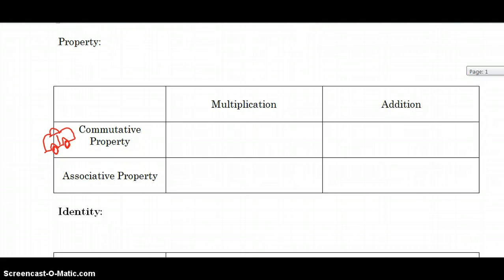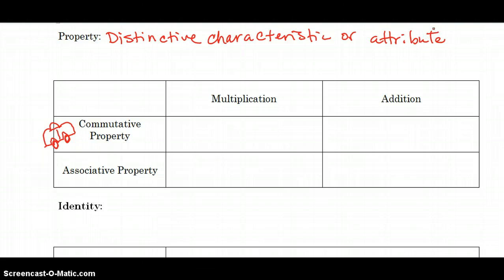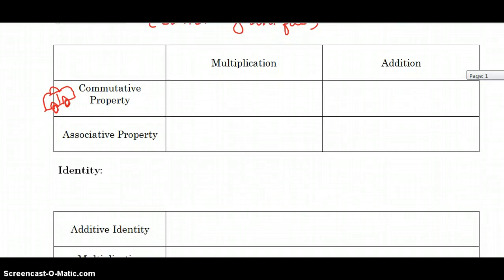If someone asks me to describe some properties of you, they're asking me to give some distinctive characteristics about you. So a property is a distinctive characteristic or an attribute. What makes you unique? As we're going through these mathematical properties, I want you to ask yourself, what's unique about each property?